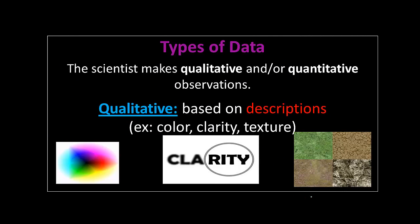Now let's talk about types of data — qualitative and quantitative. Qualitative is based on descriptions like color, clarity, or texture. Qualitative and quantitative look a lot alike, so here's how to remember it: the 'L' in qualitative — think 'looks like.' So anything that doesn't have a number, like color, clarity, or texture, is qualitative.